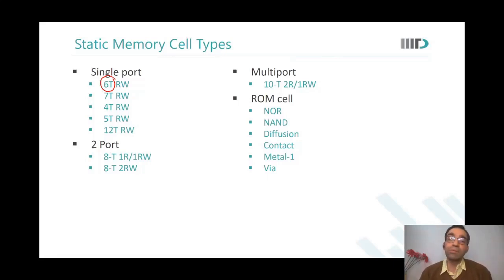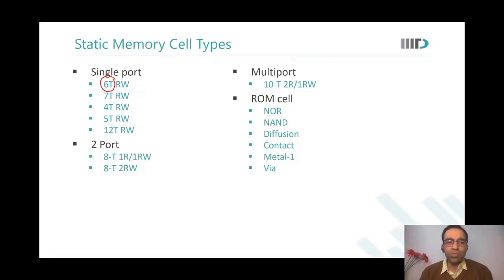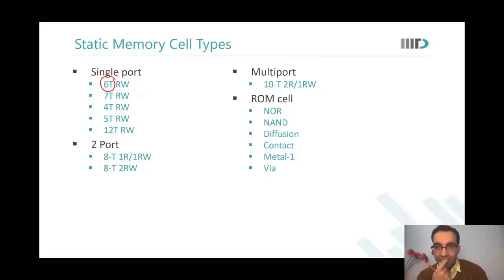Or if it's a crossbar memory, there may be no transistor at all — it's just a crossbar there. You will need some transistor, but yeah. The number before the alphabet T represents number of transistors in the memory cell. So which memory cell do you think is bigger — 6T or 4T? It should be 6T. Why? More number of devices, more area.